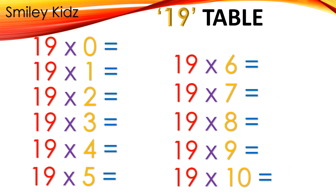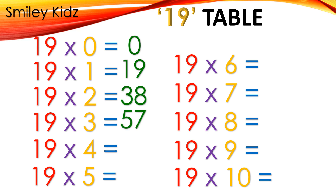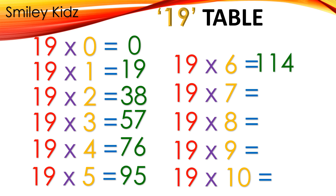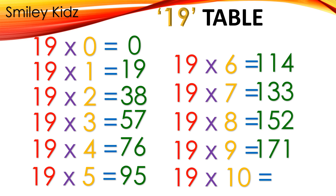Table 19: 19×0=0, 19×1=19, 19×2=38, 19×3=57, 19×4=76, 19×5=95, 19×6=114, 19×7=133, 19×8=152, 19×9=171, 19×10=190.